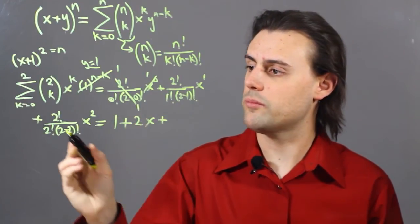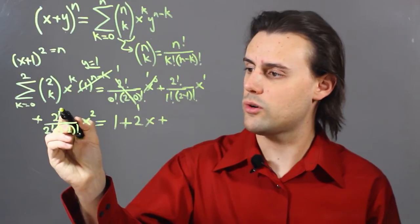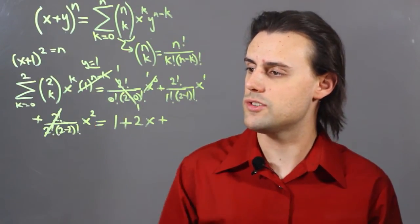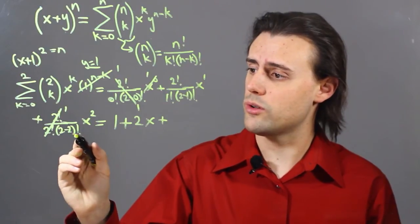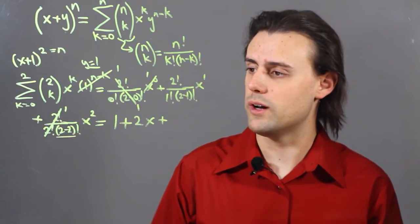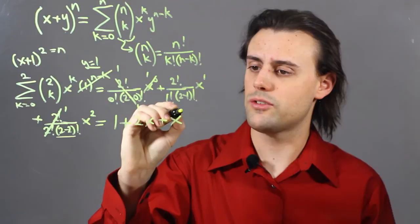And then finally for my third term, I have 2 factorial divided by 2 factorial, which is just 1, and 0 factorial down here, which is also equal to 1. So, I end up with x squared.